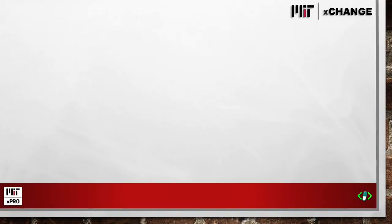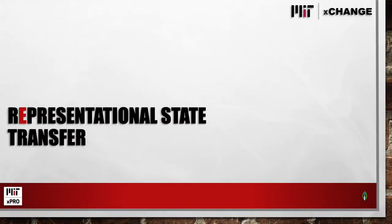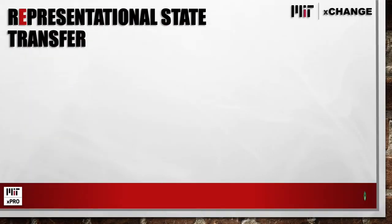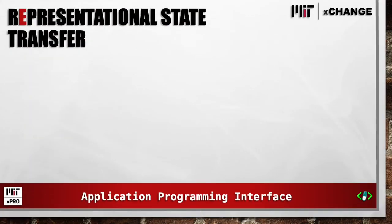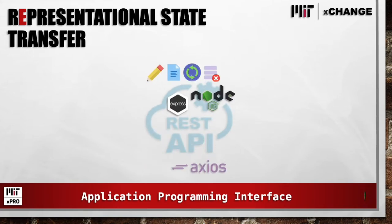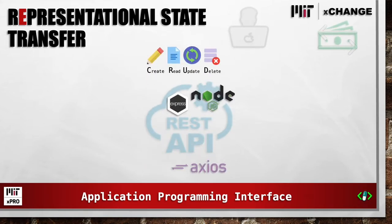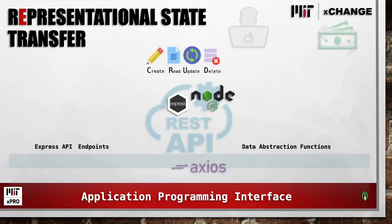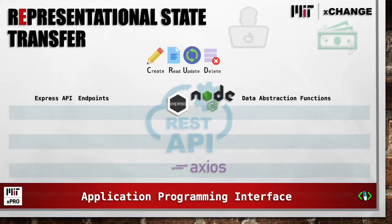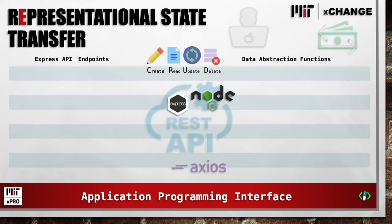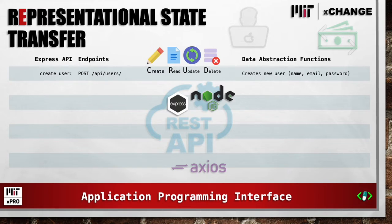Now let's dive a little deeper into the Representational State Transfer application programming interface. This table covers the Express API endpoints and data abstraction functions. Create user is a post route to API slash users. It creates a new user, requiring the name, email, and password.